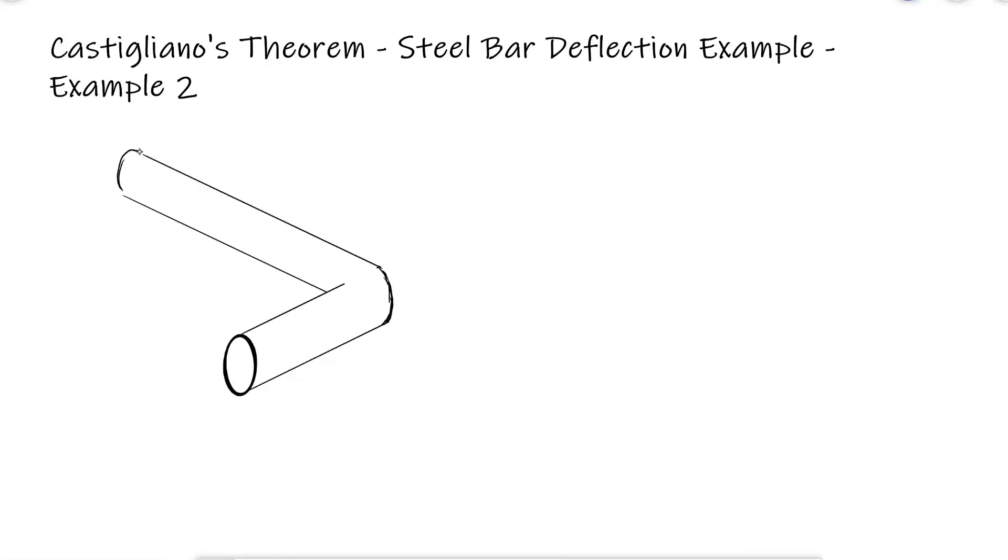Using Castigliano's Theorem, what is the deflection of point B in the direction of the force F for the steel bar shown? This is the second example video for the main video about Castigliano's Theorem, so make sure to check out that one and the first example before watching this. Links below.